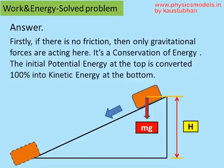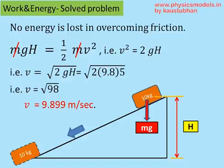Here the potential energy is converted into kinetic energy. There is no loss due to friction. So mgh equals half mv squared, therefore v squared equals 2gh. V becomes root 2gh, and plugging in the numbers we get v equals 9.899 meters per second.